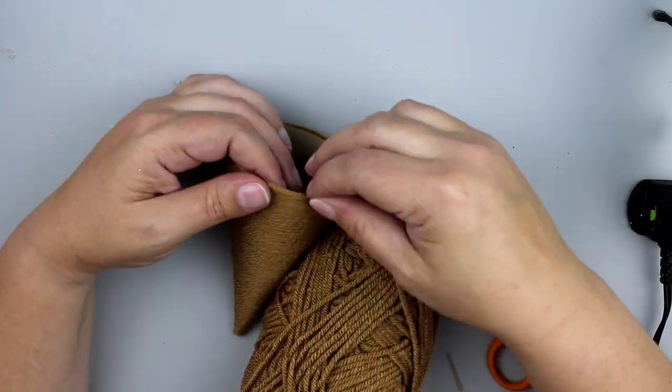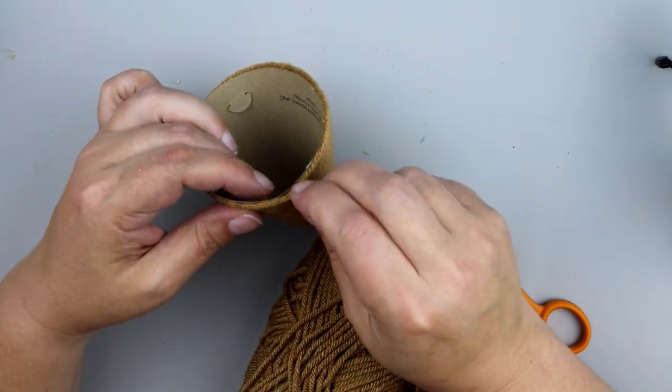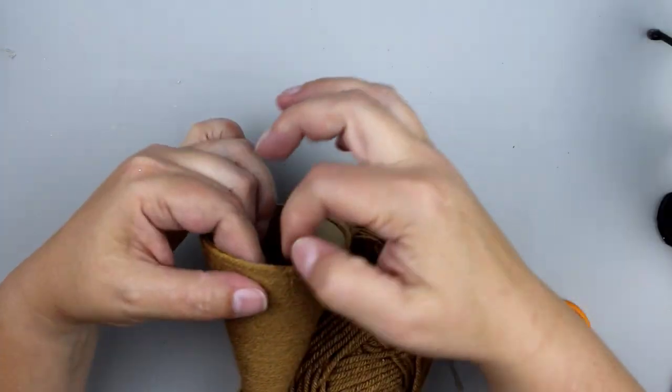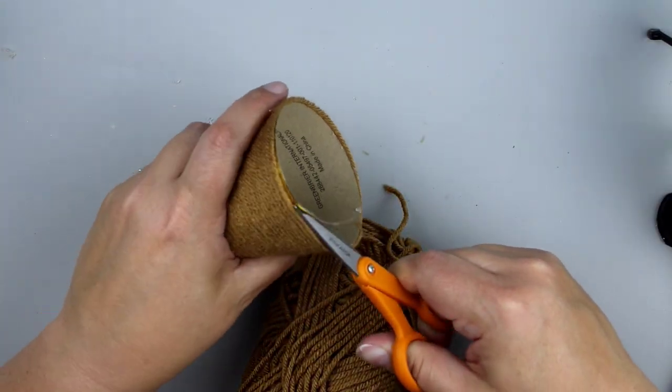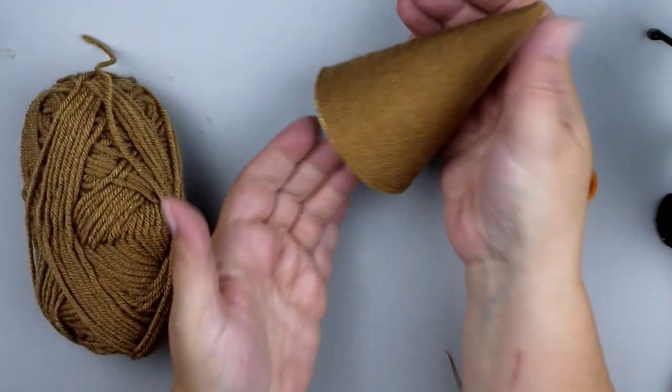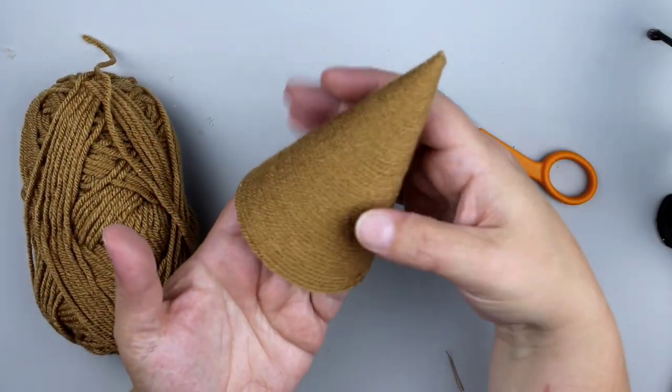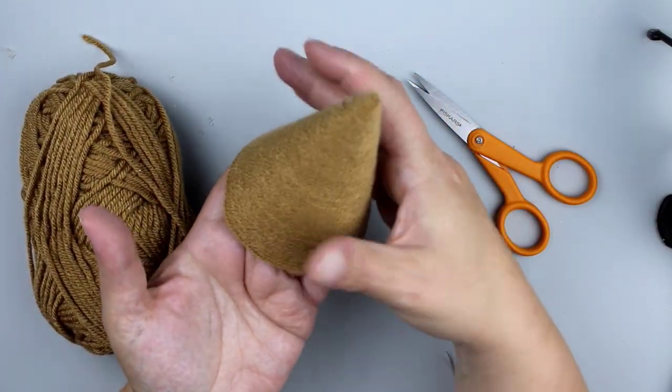I'm going to clip the end off at an angle, glue it down. And then if I have any extra bits of hat poking through, I'm just going to use my scissors and trim that down. And as you can see, we have now a gingerbread tree.